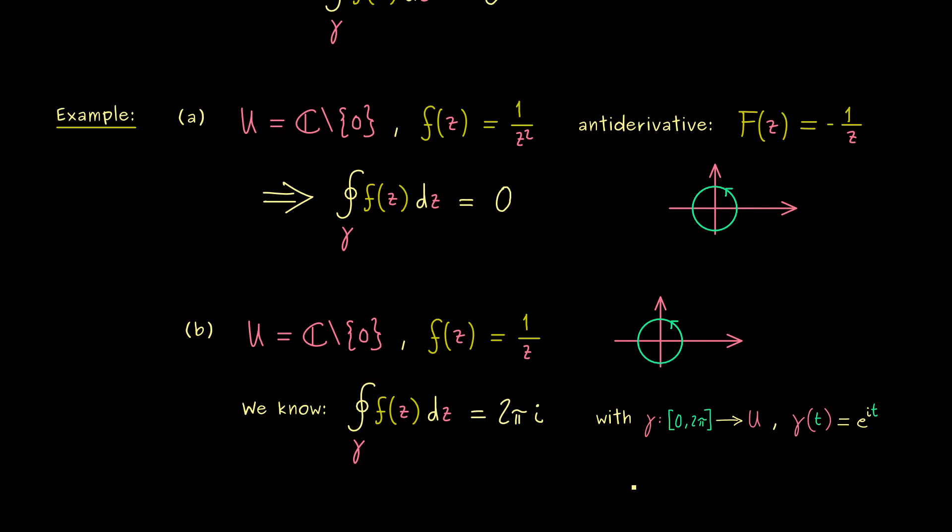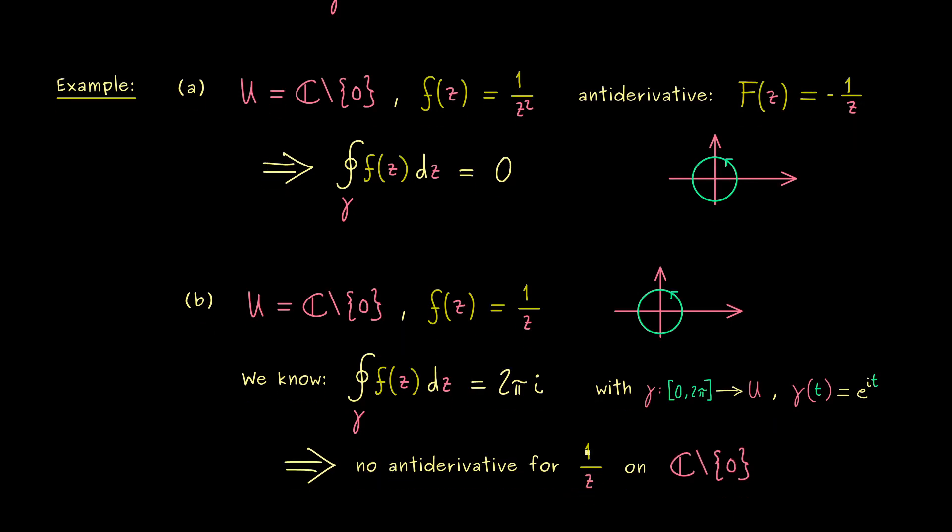Okay, but now the important thing to note is that this 2 pi i is not 0. Hence this allows us to use a contraposition and to conclude that this function here 1 over z does not have an anti-derivative on this domain. So you see this function here acts completely different than the similar looking function 1 over z squared.